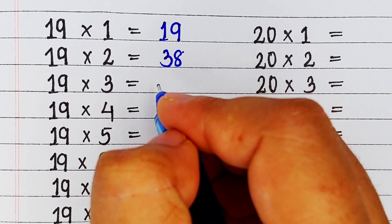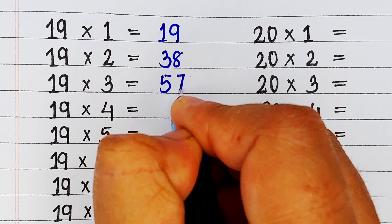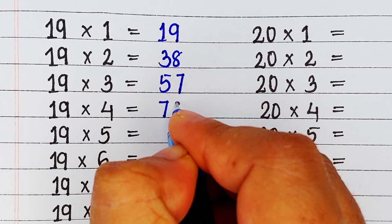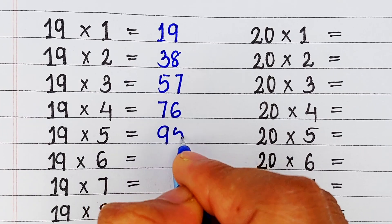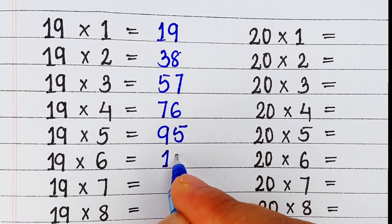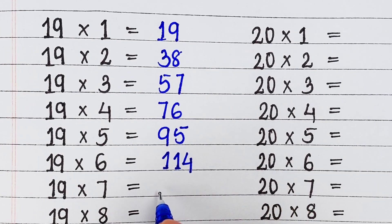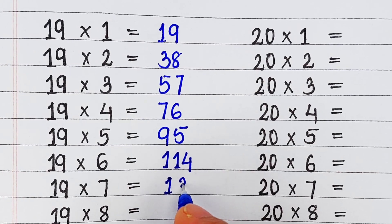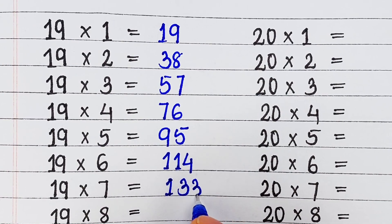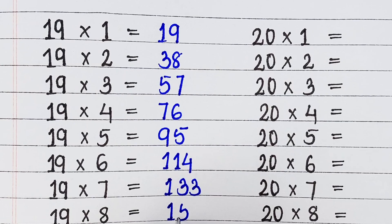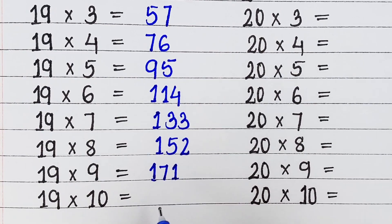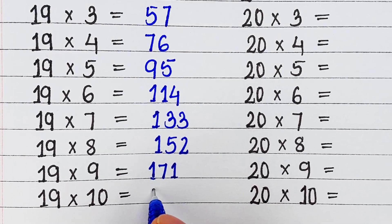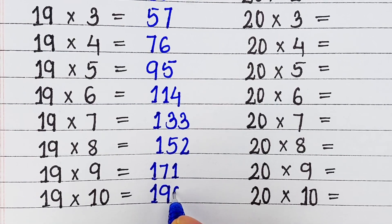Next is table of 19. 19 1s are 19, 19 2s are 38, 19 3s are 57, 19 4s are 76, 19 5s are 95, 19 6s are 114, 19 7s are 133, 19 8s are 152, 19 9s are 171, 19 10s are 190.